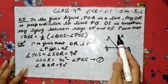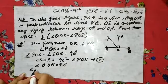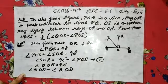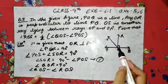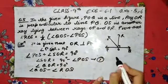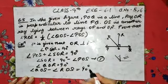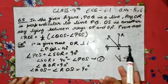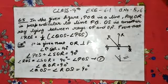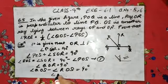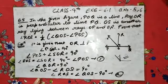Now angle QOR is also 90 degrees, obviously, because OR is perpendicular to PQ. We can write angle QOR as angle QOS minus angle ROS. So angle QOS minus angle ROS equals 90 degrees, which gives angle ROS equals angle QOS minus 90 degrees. Write this as the second equation.